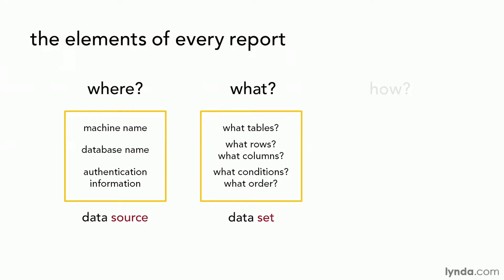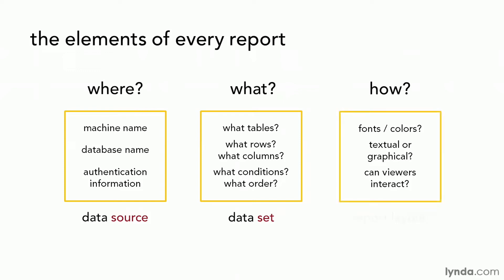Finally, once we've defined the where — the data source — and the what — the data set — we can define the how: how should this be presented? What does it look like? What is the layout? This ranges from purely presentational choices, like fonts and colors, to more structural choices, because the same data could be shown many different ways. Is it just raw text and numbers? Or will we generate charts and graphs? Will we allow viewers to interact with the report, resort it, and move through pages? Everything we do falls into the where, the data source; the what, the data set; and the how, our report layout.